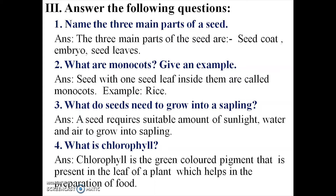Second one: what are monocots? Seeds with one seed leaf inside them are called monocots. Examples are rice, wheat, and maize - these all have a single seed leaf.